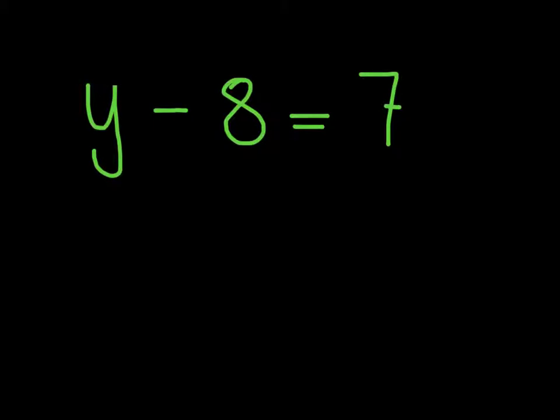Here, I have the equation y minus 8 equals 7. Remembering that my goal is always to isolate my variable, I will perform the inverse operation of subtraction, and I will add 8 to both sides of my equation.